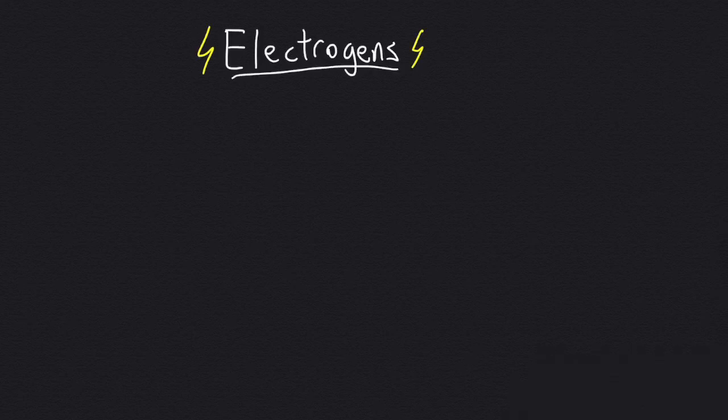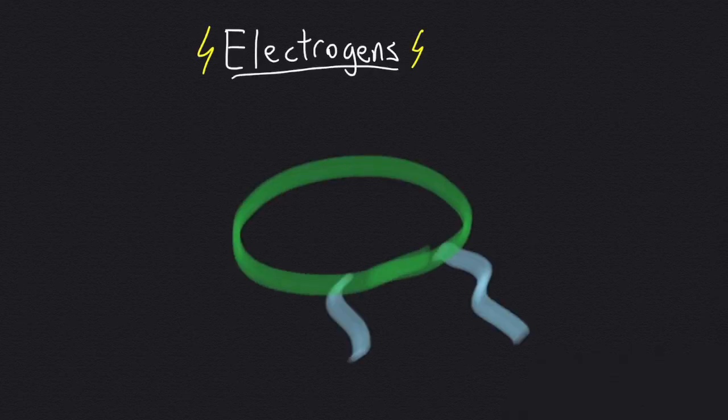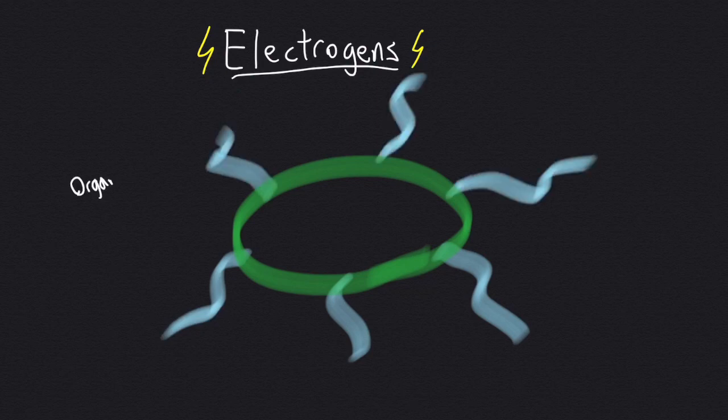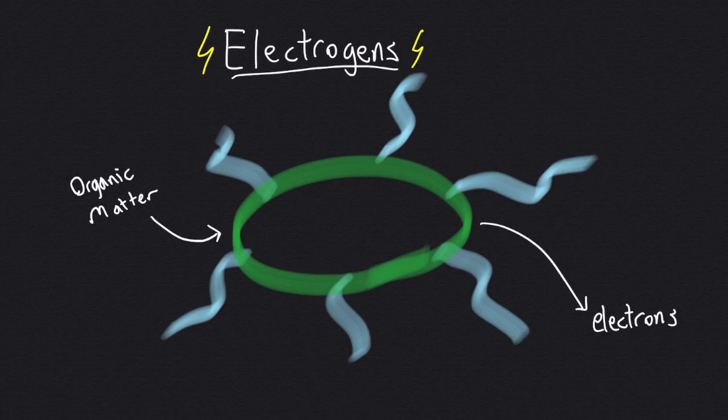Electrogens are the key component of microbial fuel cells. In the microbial fuel cell, they take in organic matter and digest it, releasing electrons, which are captured and used to generate an electric current.